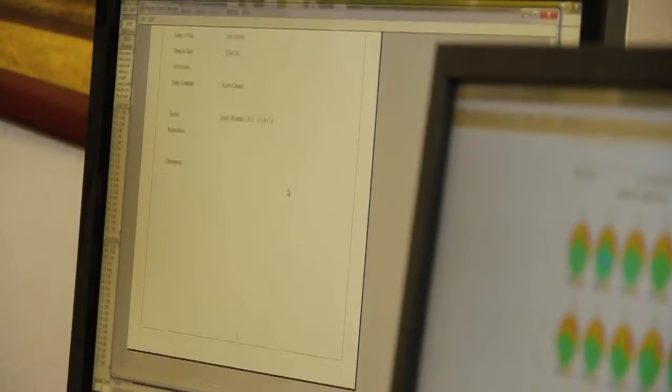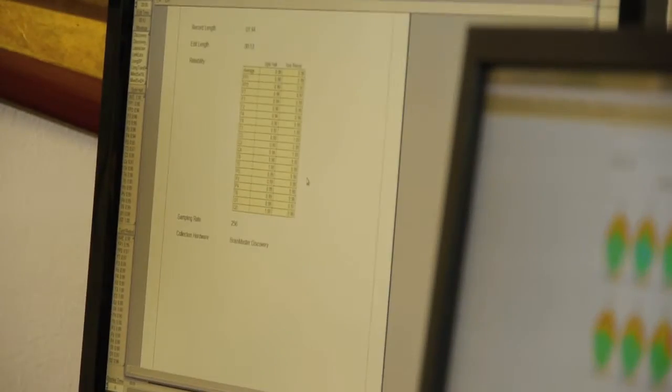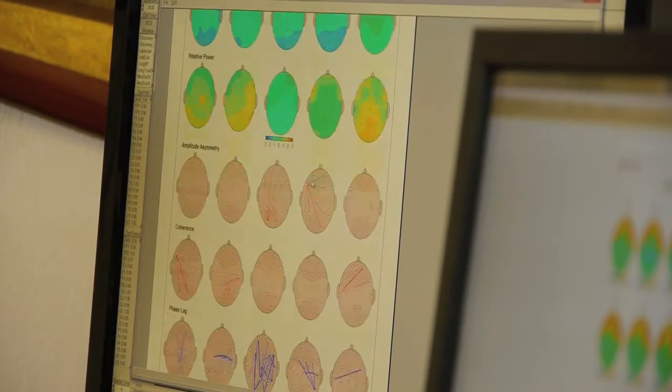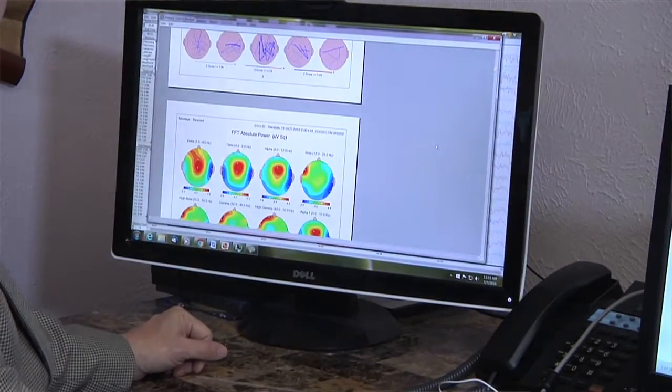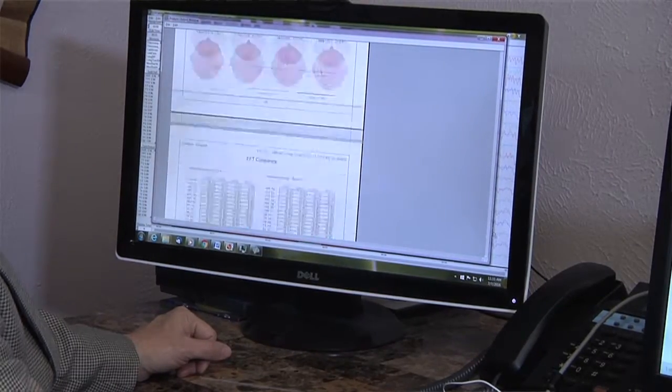From this data, we can actually generate a report and it'll tell us what parts of her brain are talking too fast, which parts are talking too slow, which ones are too high in beta in different parts of the brain, which ones are too low in theta in other parts of the brain.